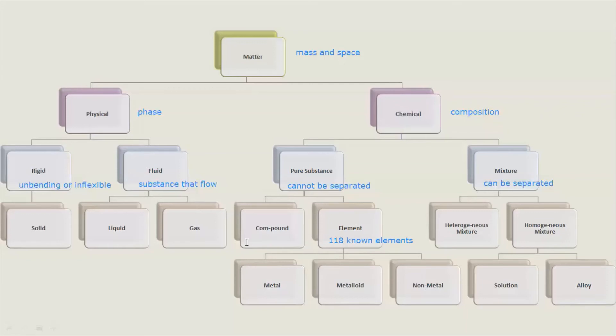While compound is a pure substance that can be broken down into two or more elements by chemical means. Compounds have fixed composition. That is, a given compound always contains the same elements in the same percentage by mass.